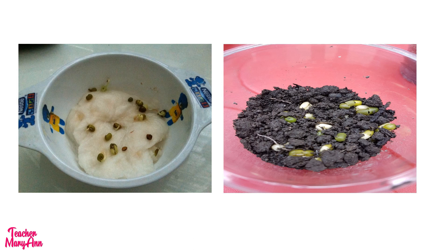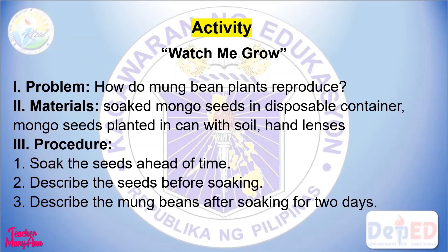Take a look at the munggo seeds soaked in a wet cotton and another munggo seeds planted in a can with soil. Try to do this setup in your home. Today we're going to describe the different modes of reproduction of munggo and other flowering plants. The activity is called Watch Me Grow. The materials you need are: soaked munggo seeds in a disposable container, munggo seeds planted in a can with soil, and hand lenses.